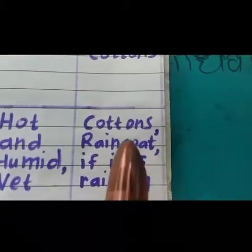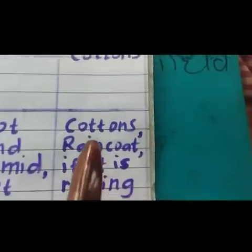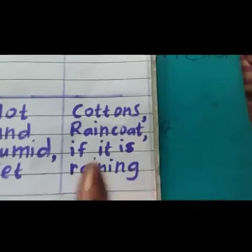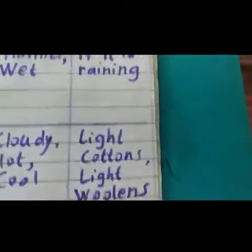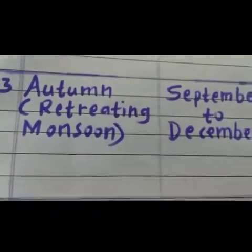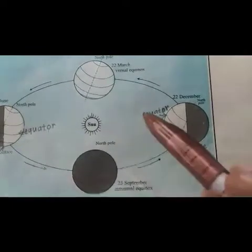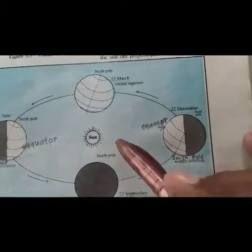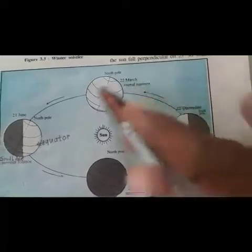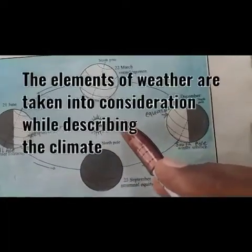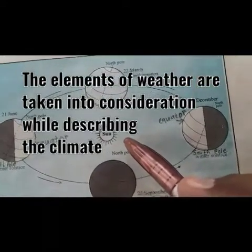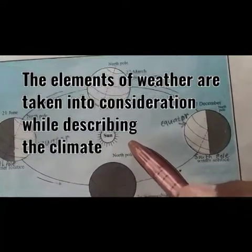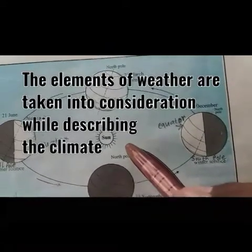For example, we mainly use cotton clothes in summer season, a raincoat if it is raining, and woolen clothes in winter season. Thus, we have noted the relationship between the atmospheric conditions or weather conditions and seasons on the surface of the Earth. The elements of weather can be taken into consideration while describing the climate. Let us see the elements of weather.